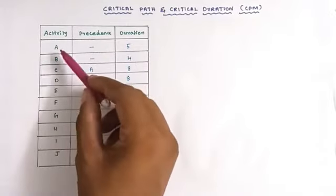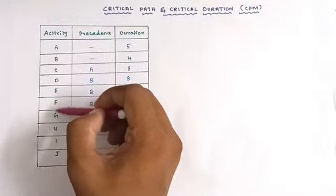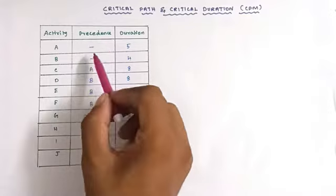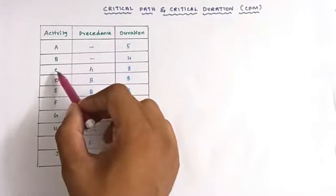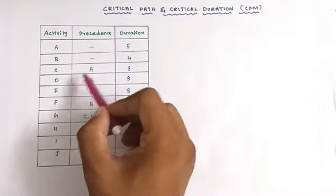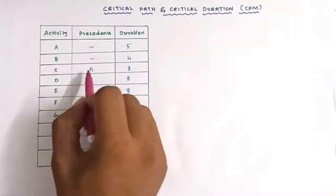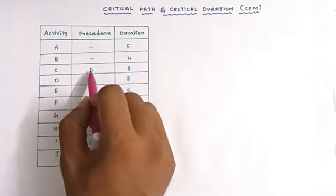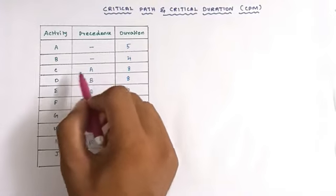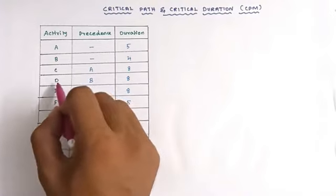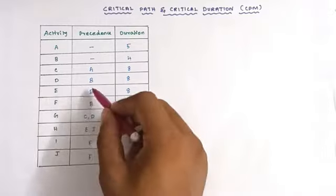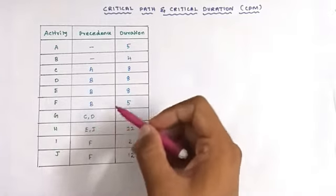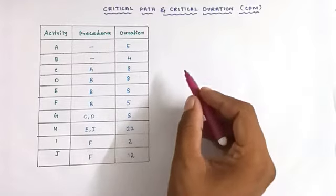The 10 activities are A, B, C, D, E, F, G, H, I, and J. The corresponding precedence relationships are given — for example, C activity is started when A activity is completed, and D activity will be started after the completion of B activity. Likewise, every activity has a precedence relationship. So first we have to draw the network path.